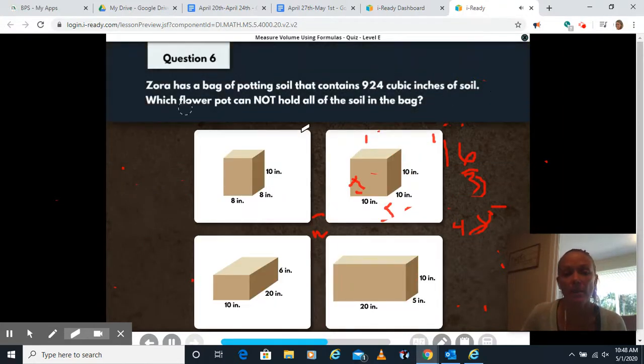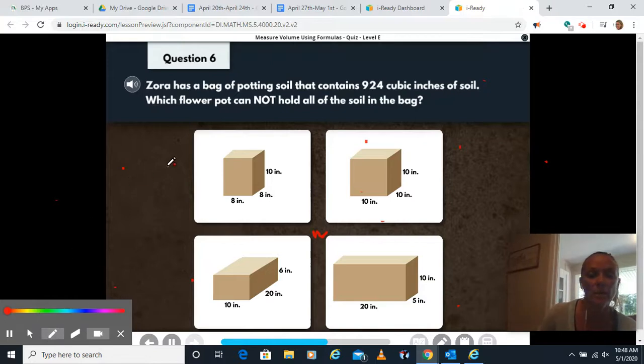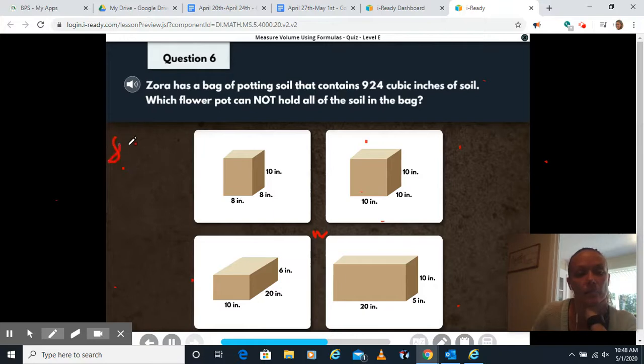Zora has a bag of potting soil that contains 924 cubic inches of soil. Which flower pot cannot hold all the soil in the bag? So again, we're going to have to calculate each one of these to figure out the volume of each flower pot. So this one we have 8 times 8 times 10. 8 times 8 is 64. 64 times 10. So we're just going to add that 0 on. So we've got 640 there.